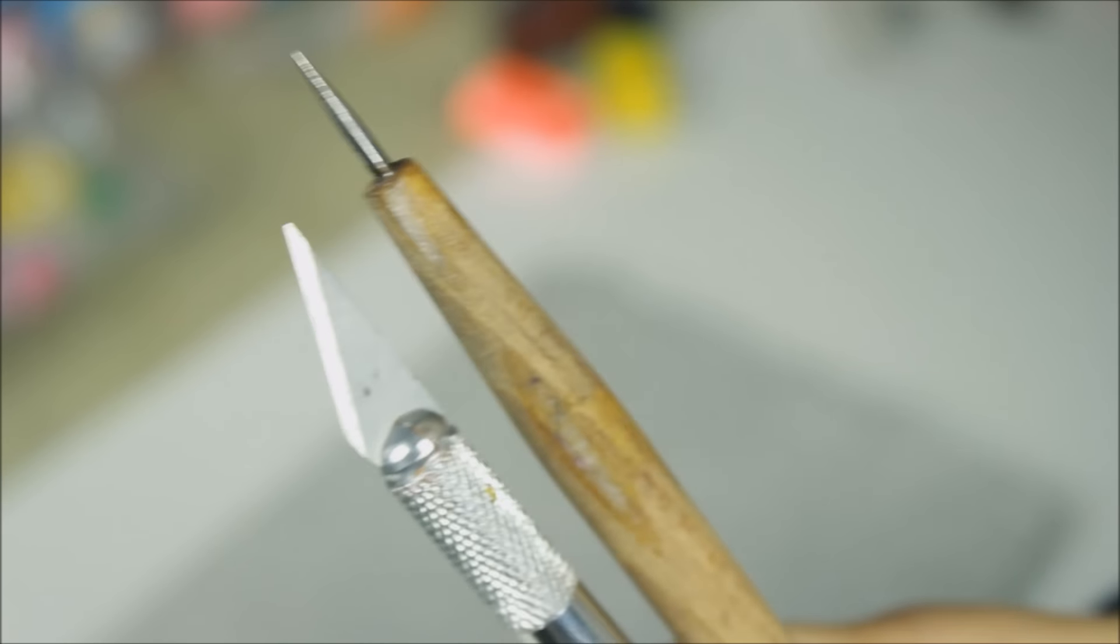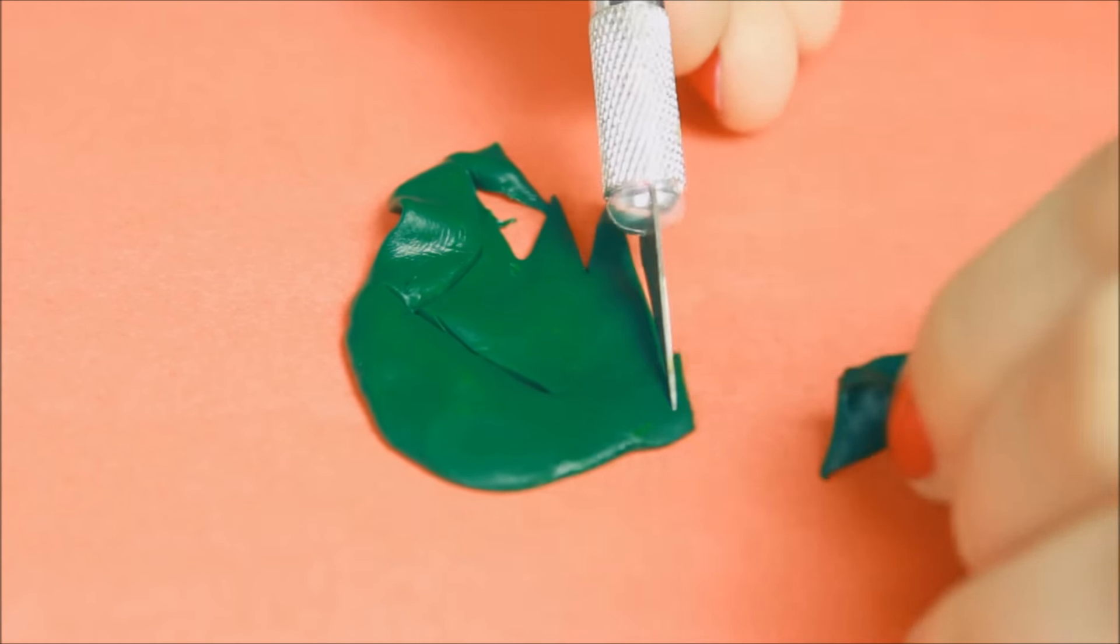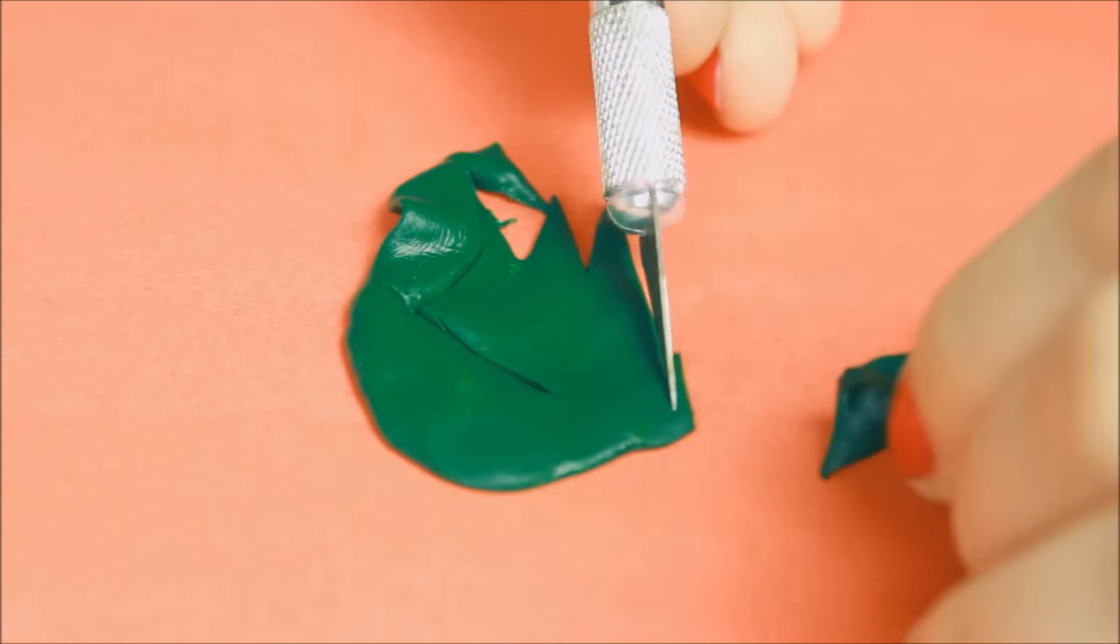Für das erste Design müsst ihr jetzt erstmal ein Stück grünes Fimo kneten und platt drücken. Und dann eignet sich das Skalpell gut, um diese Weihnachtsbaumform da auszuschneiden. Da muss man ein bisschen vorsichtig sein, weil mir war das Grün jetzt extrem aufgeheizt durch die Finger und dann ist es umso schwieriger. Aber mittlerweile, Übung macht den Meister.